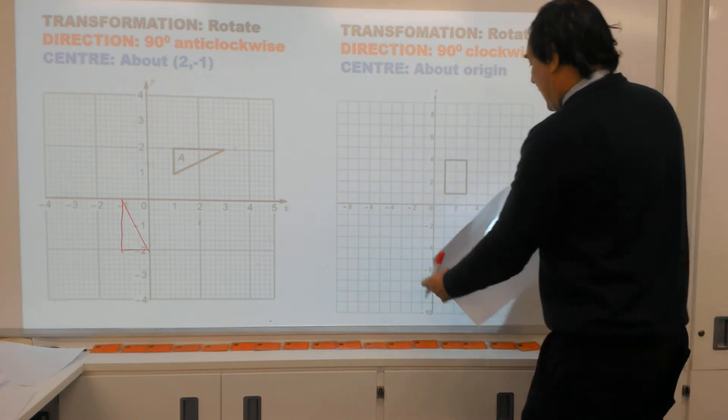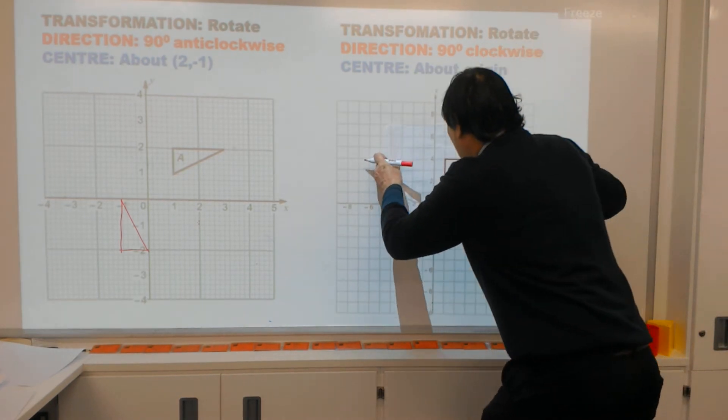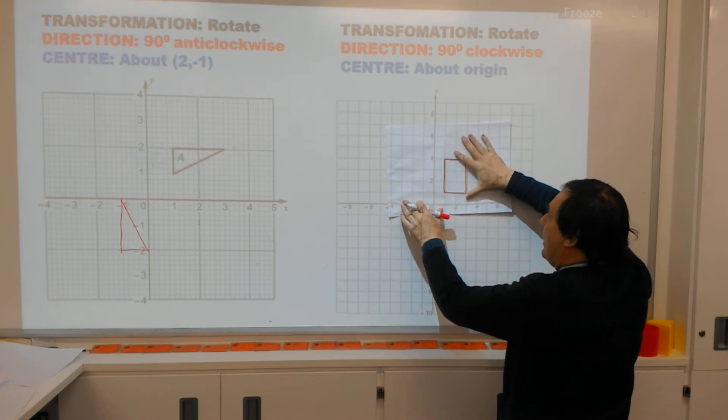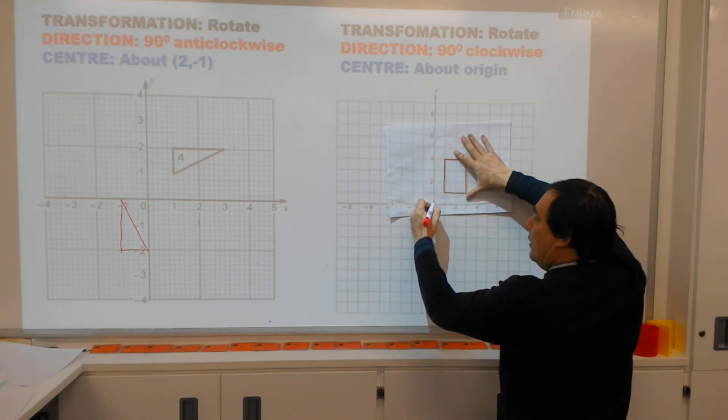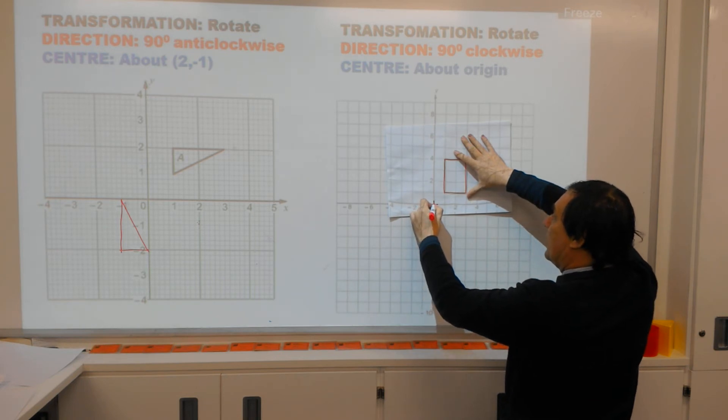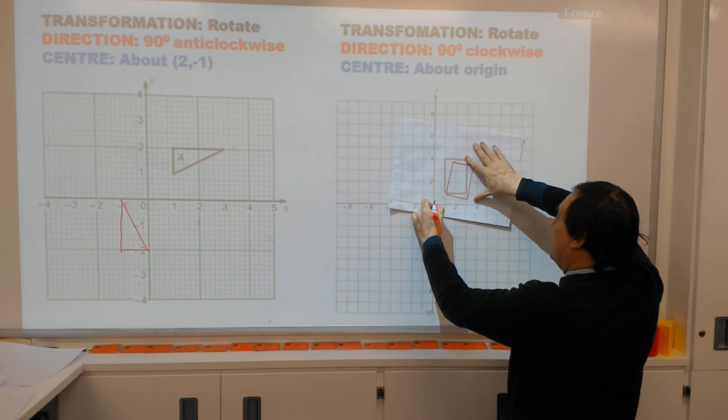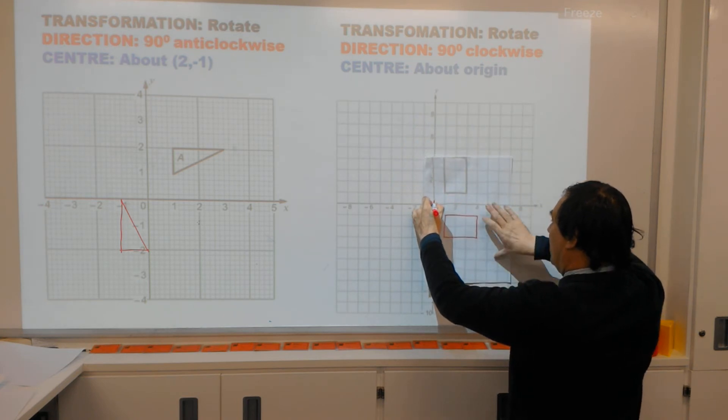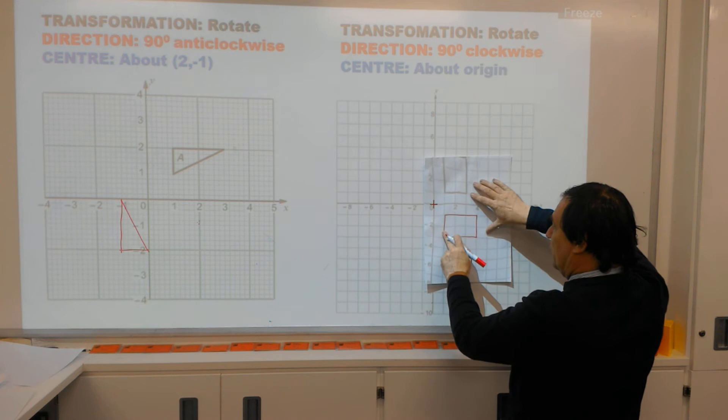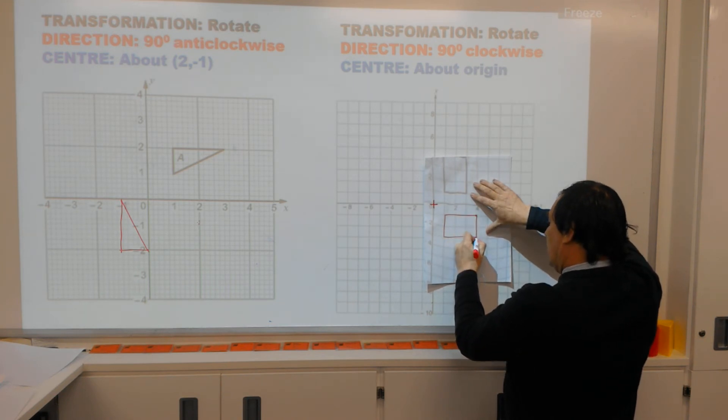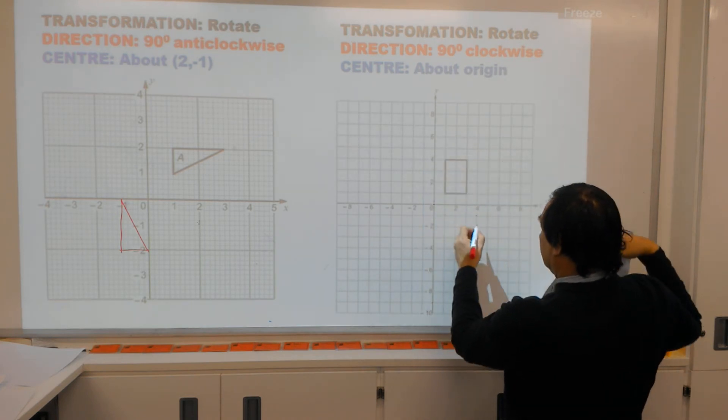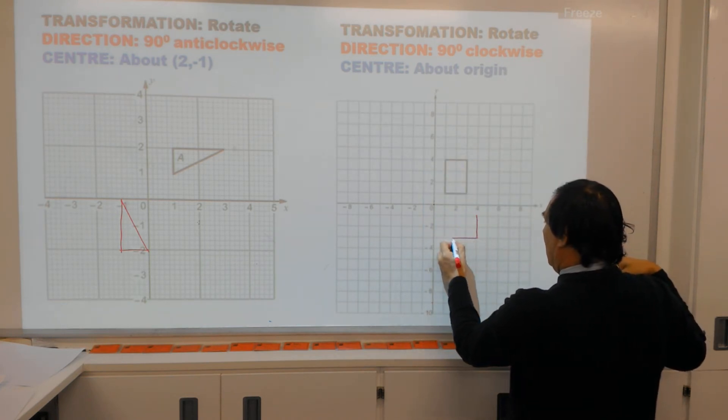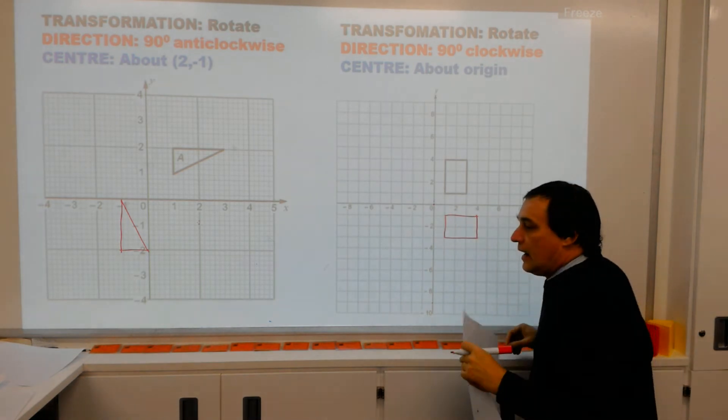So, as before, we're going to trace our shape, which has been done already. Then we're going to mark the origin, (0, 0). Stick our pen in. This time we're going to go 90 degrees clockwise. So we're going to go with the clock 90 degrees clockwise. Quarter turn there. And that shape will fall down into its new position. Again, dot, dot, dot, dot. And our shape will end up here.